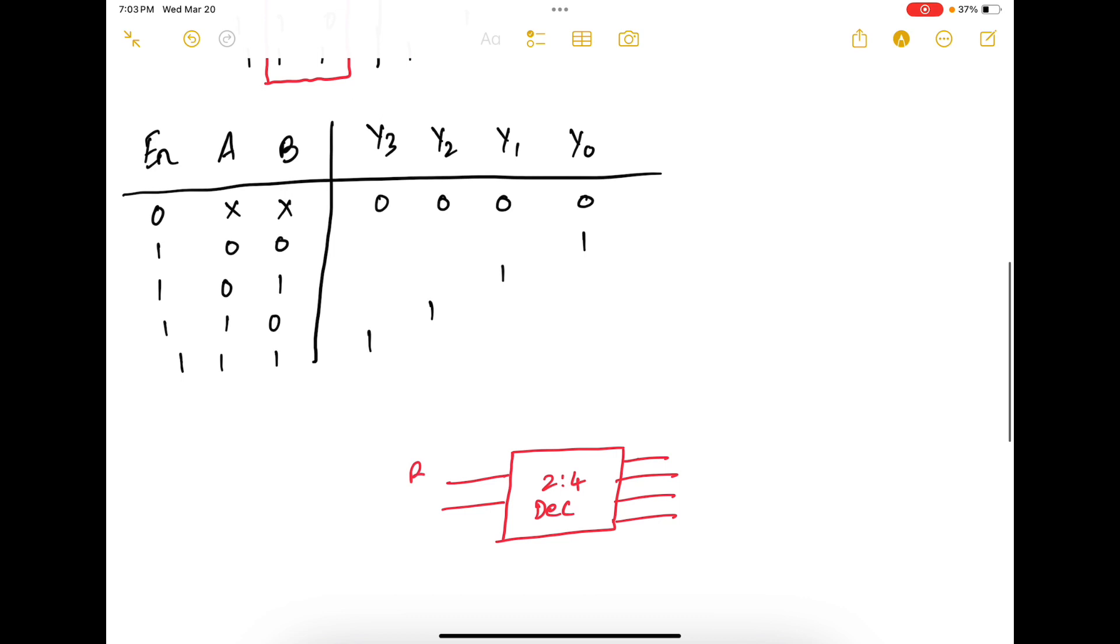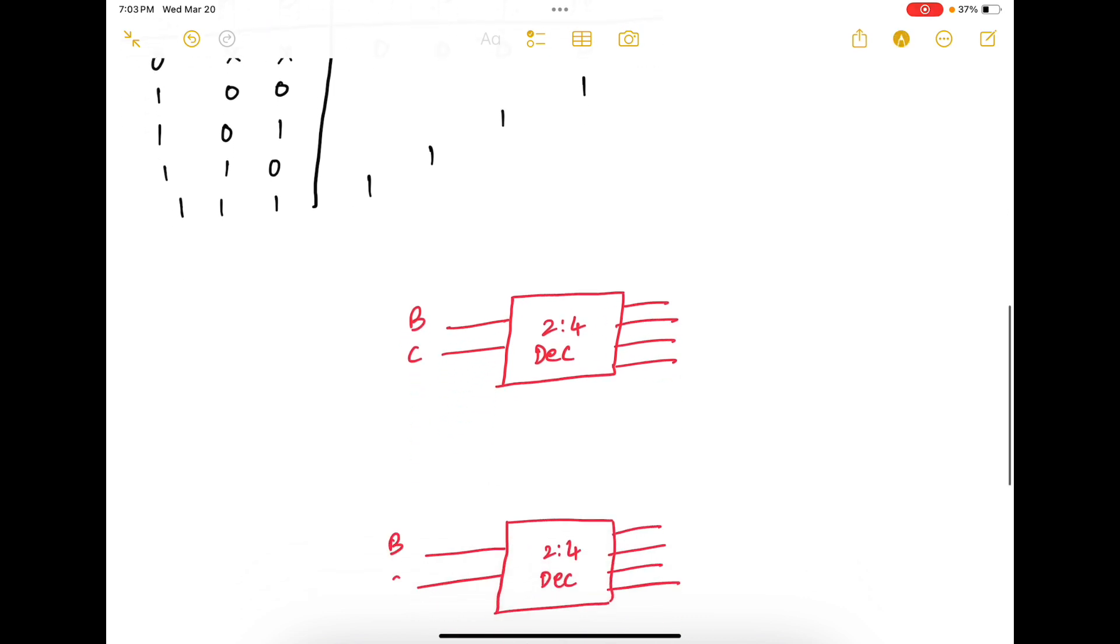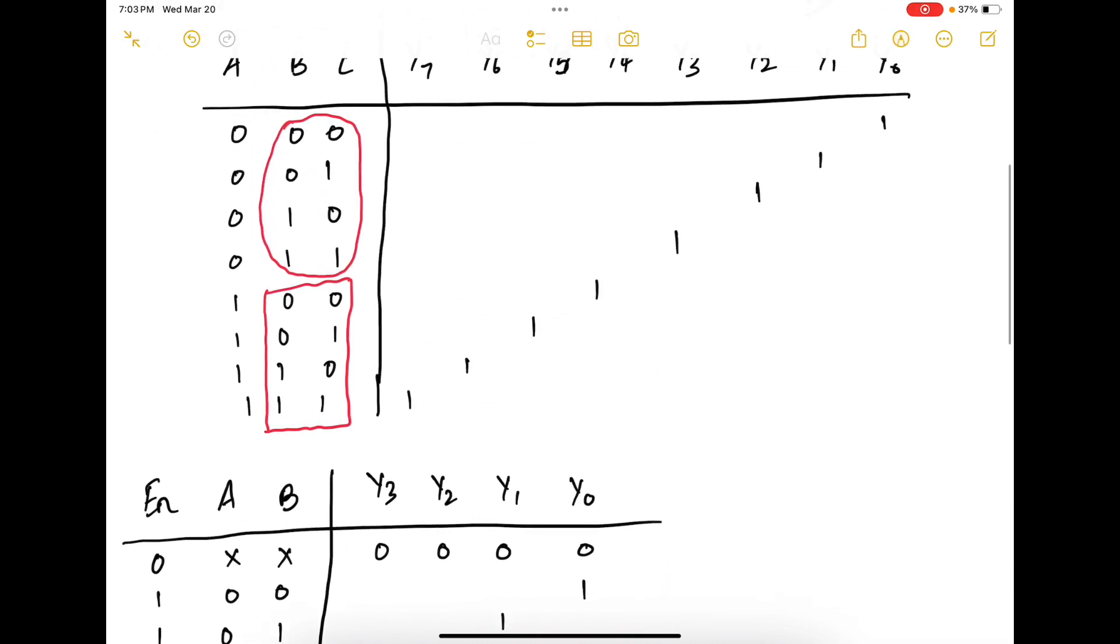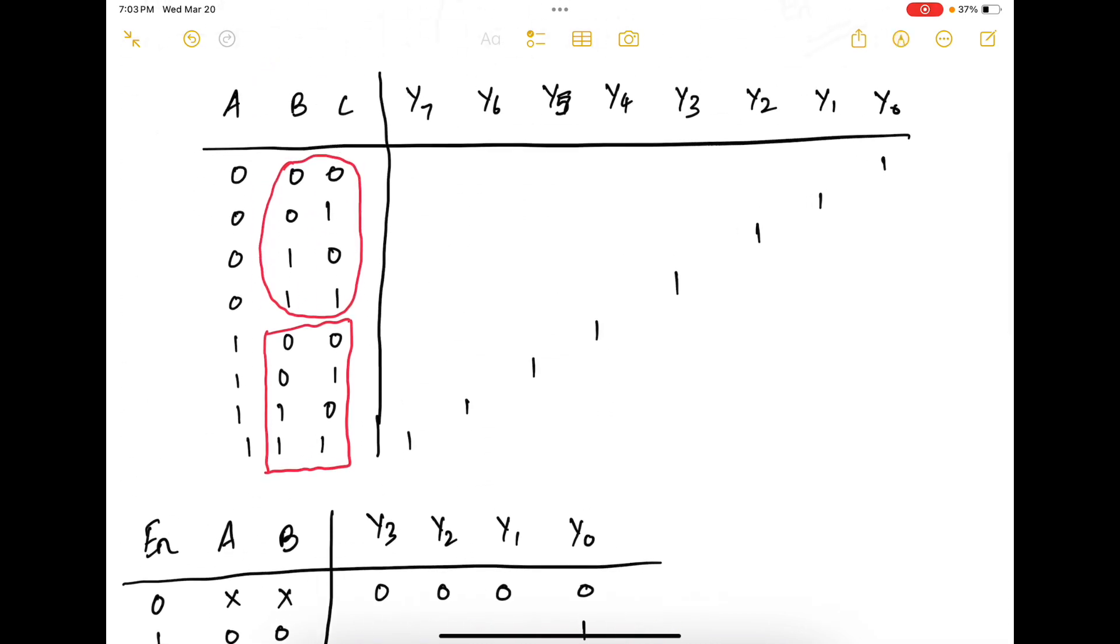Now, the inputs to the first decoder will be B and C and the second will be B and C as well. Now here, I can use A as my enable signal. So essentially, when A is 0, I can enable the upper decoder so that I can get these outputs. And when A equals to 1, I can enable this decoder so that I can control these ones.